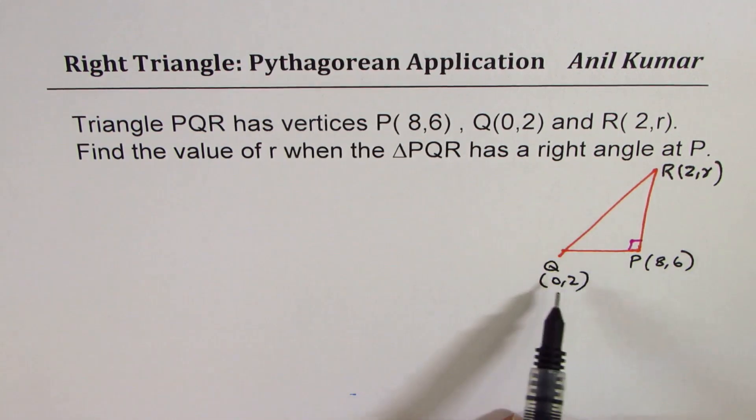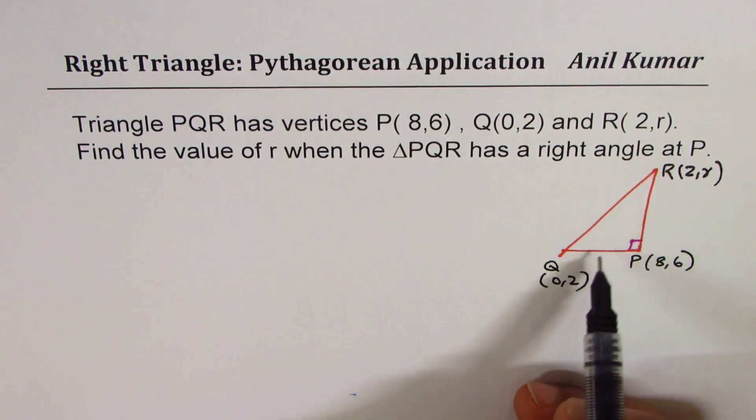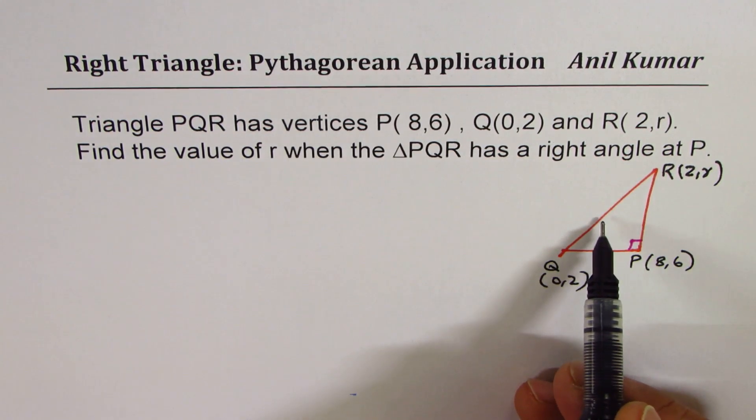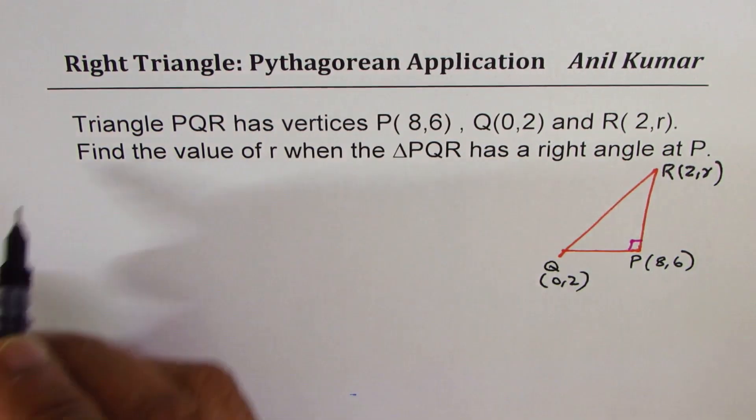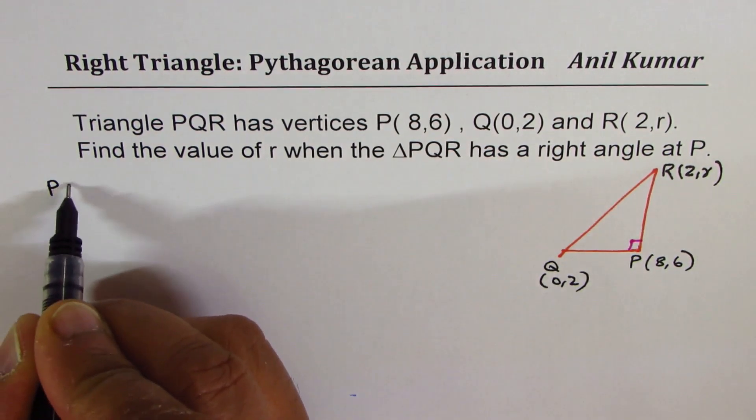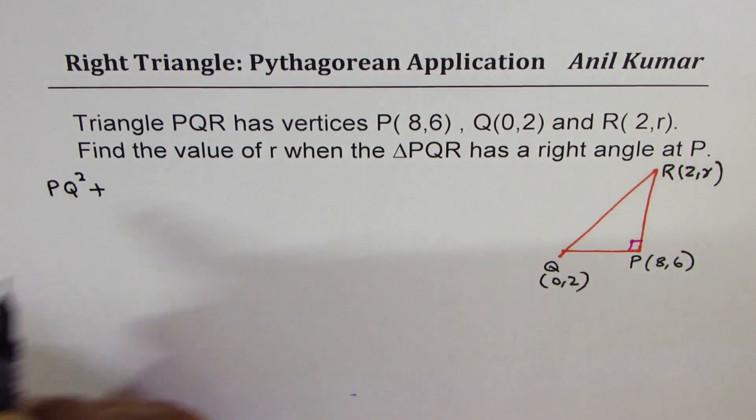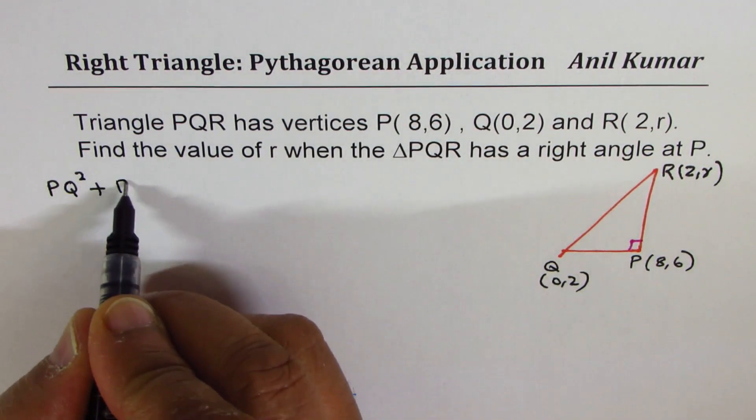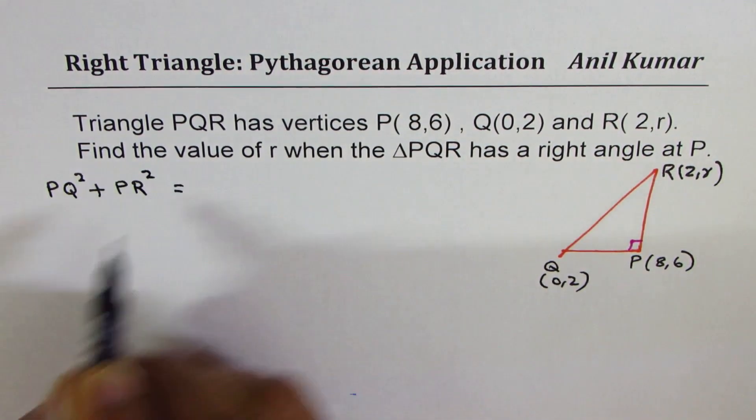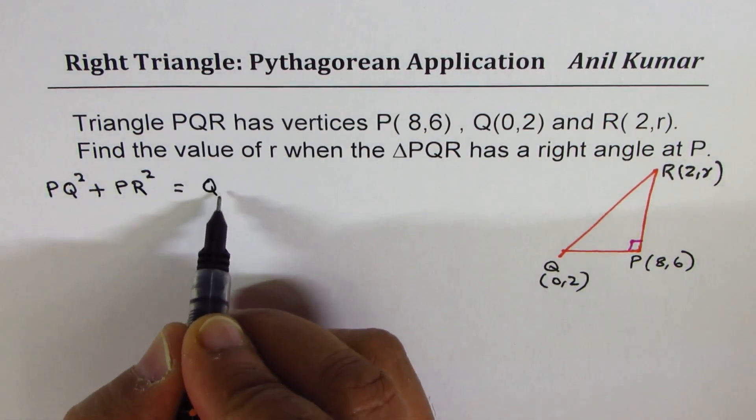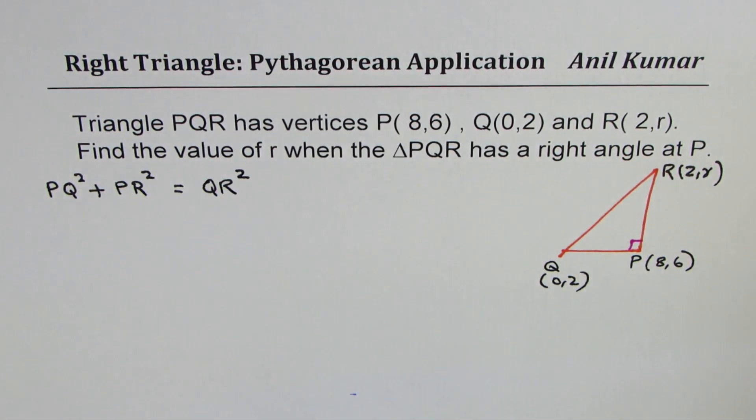Now, in a right triangle, sum of squares of the smaller sides is equal to the square of hypotenuse. So we can write down our equation as PQ² + PR² = QR². So that's the Pythagorean theorem.